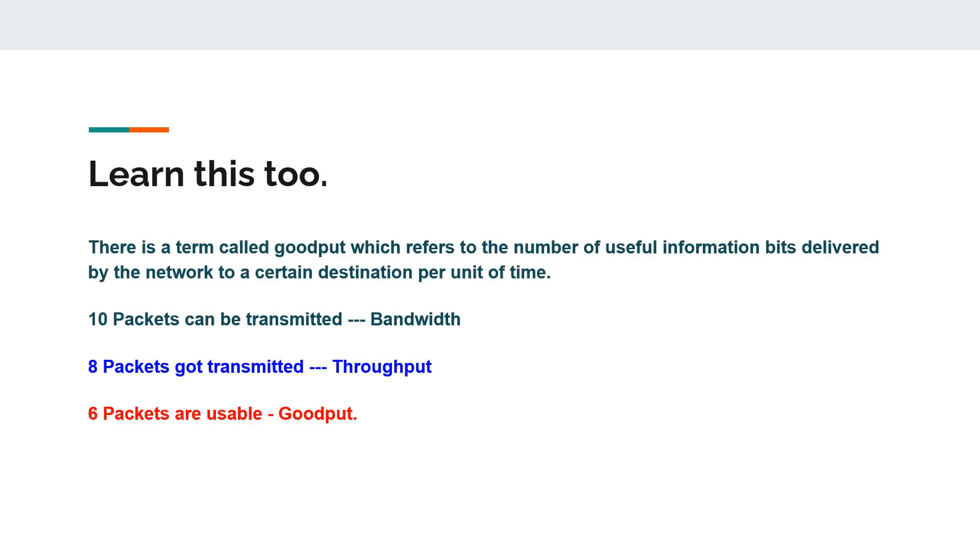There is one more term that we need to know. It's called goodput. What is goodput? I have 10 packets that can be transmitted. This 10 packets is the bandwidth. Theoretically, 10 packets can be transmitted from the source to the destination, and that's called bandwidth. 8 packets were only transmitted, and this is the throughput. And out of the 8 packets which were transmitted, only 6 packets were usable. This is called goodput.